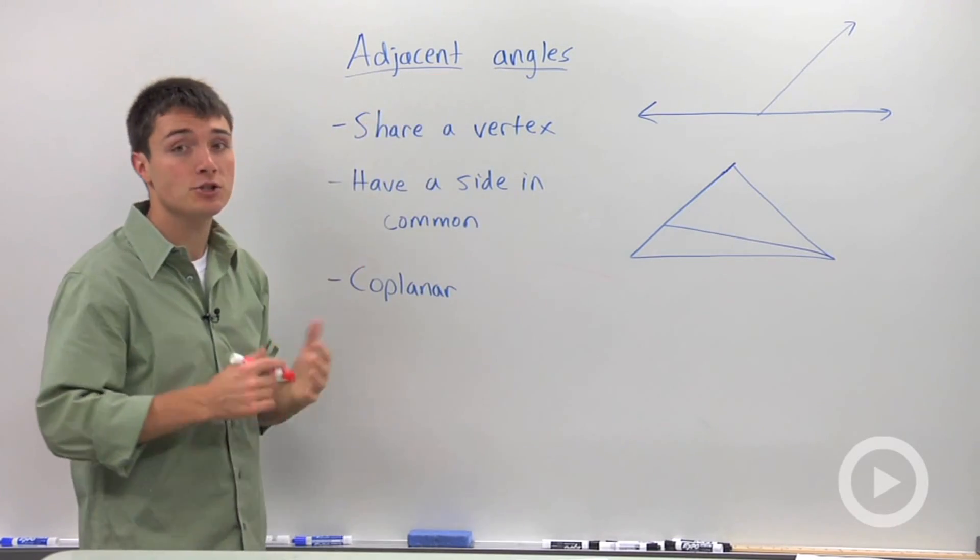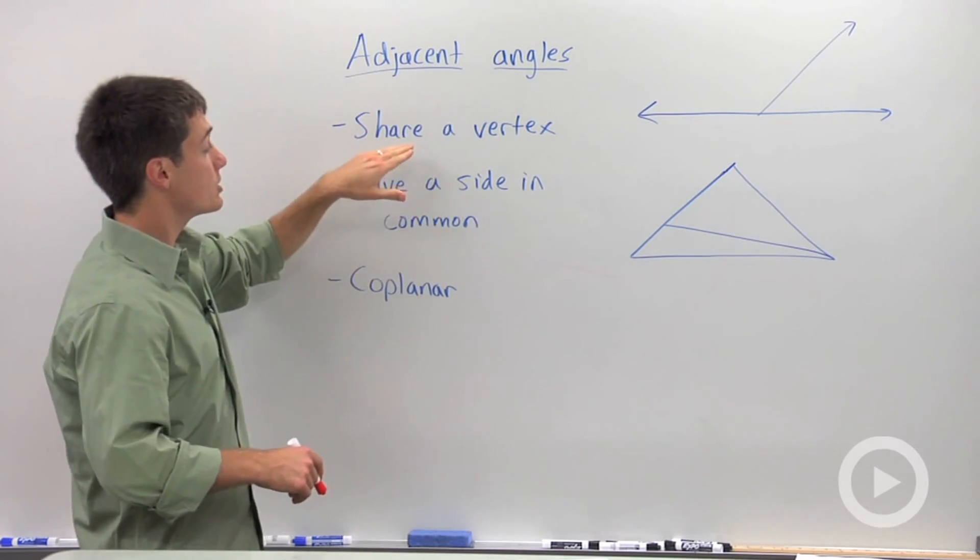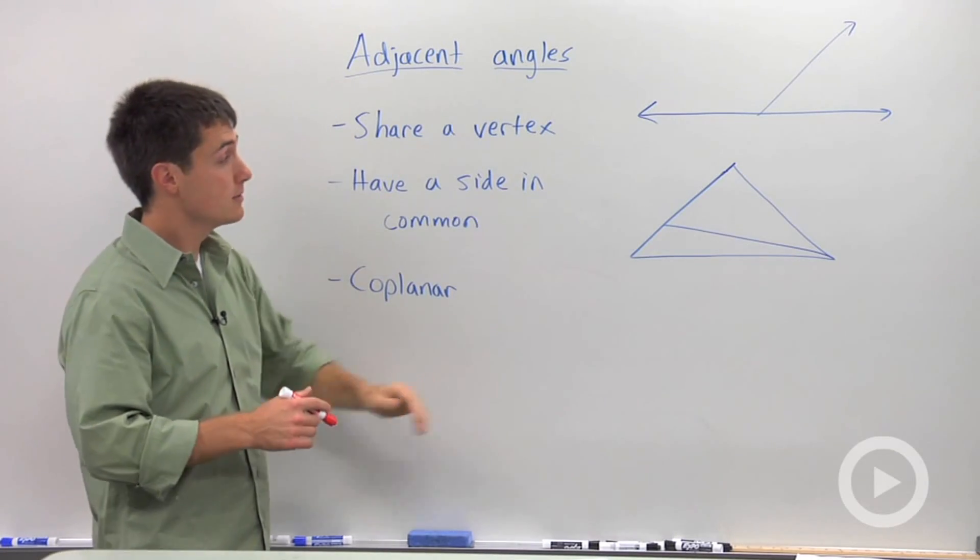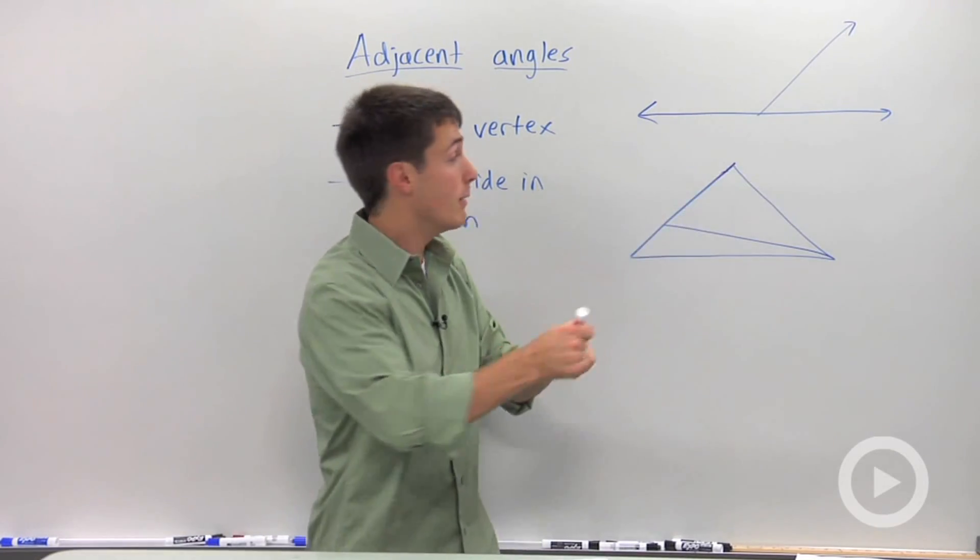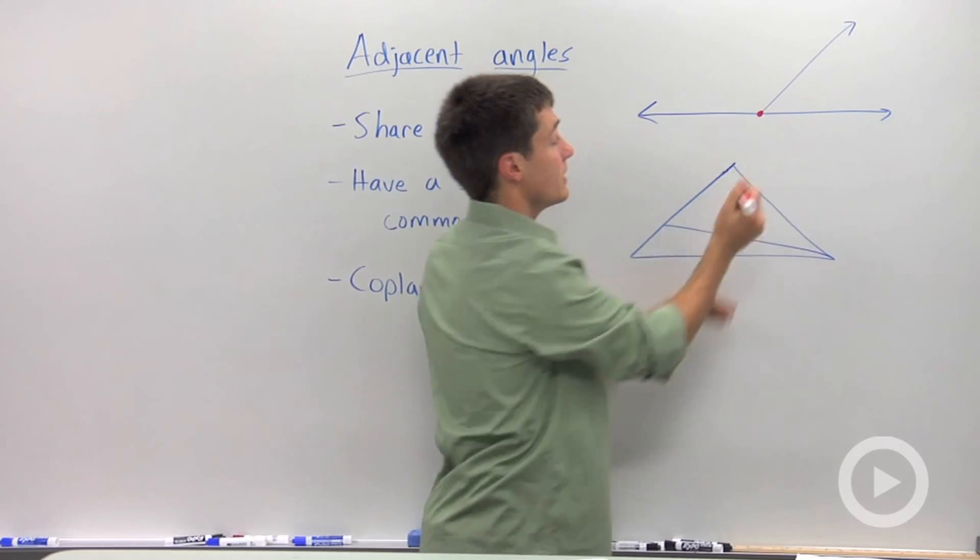We'll hold off on adjacent sides for trigonometry. But for now, the key parts of an adjacent angle is that they share a vertex. Again, the vertex is this point right here. I'm going to draw a red dot. So this right here is a vertex.